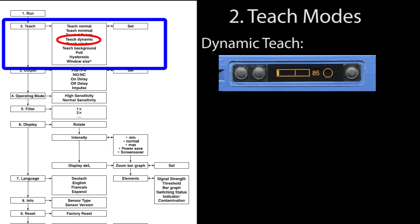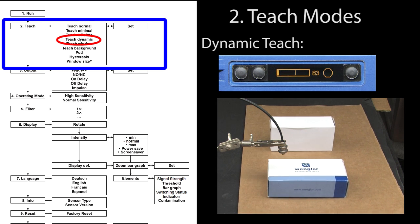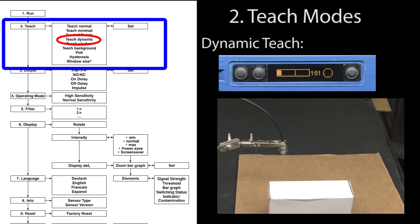So if we go back to run, sure enough we see that the large object is detected but the smaller one isn't. Perfect.